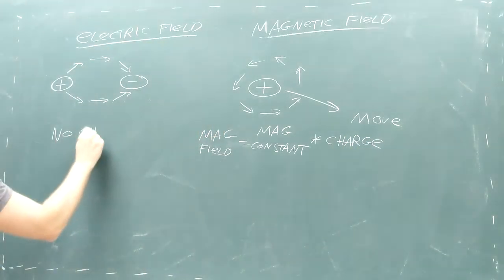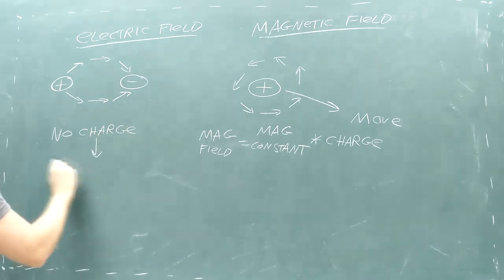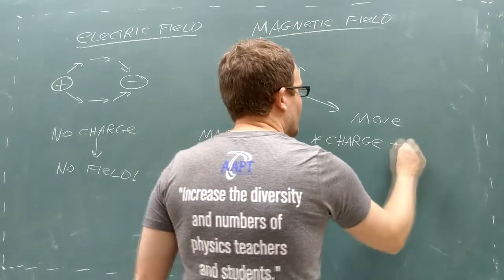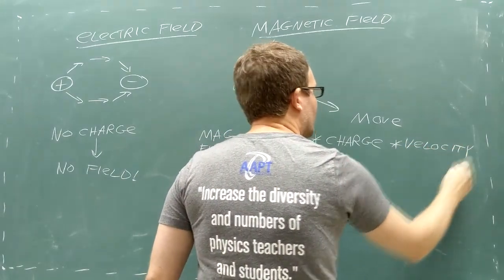If a particle has no charge, like a neutron, then it does not create a magnetic field by moving. Next comes the particle's velocity. The faster the particle moves, the greater a magnetic field it creates.